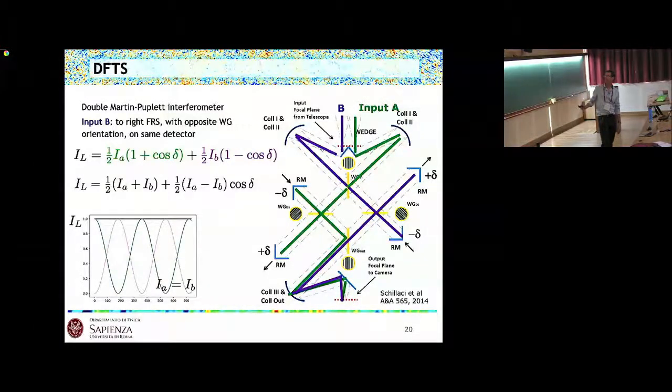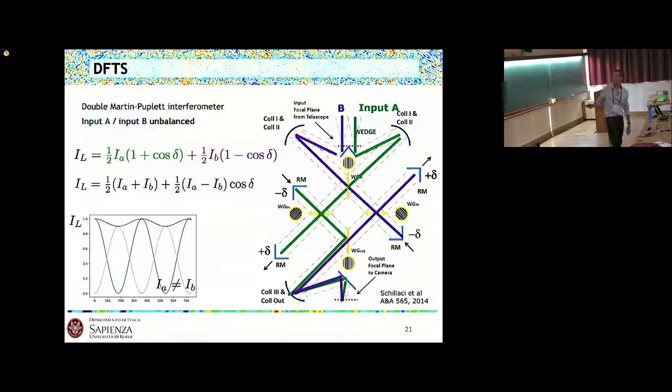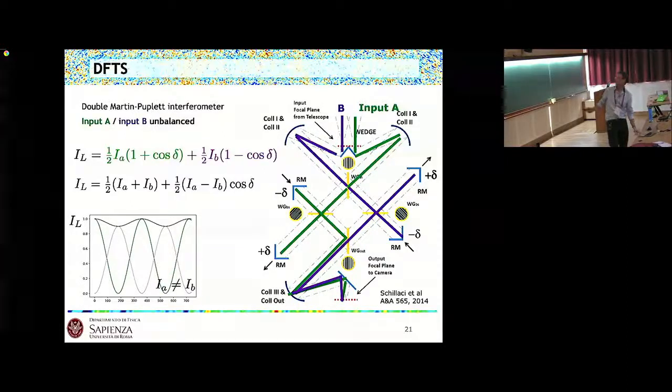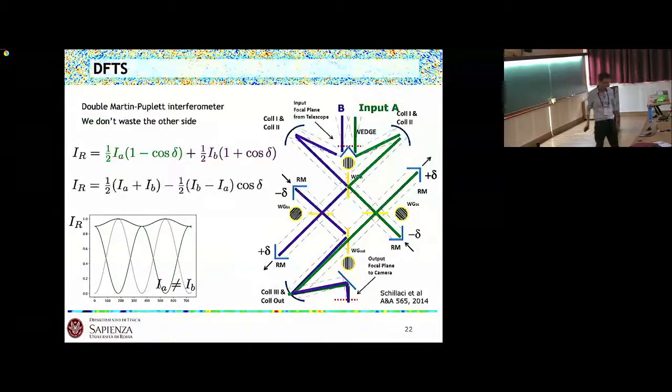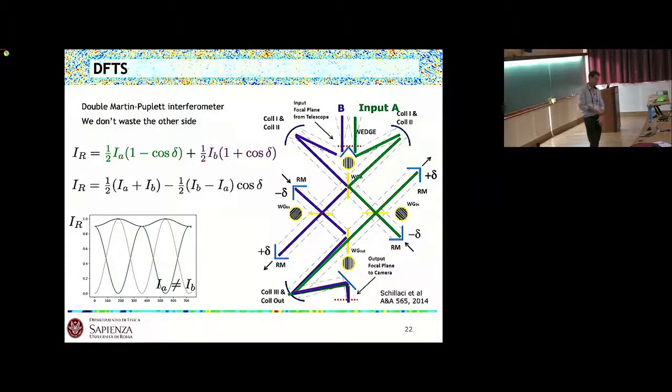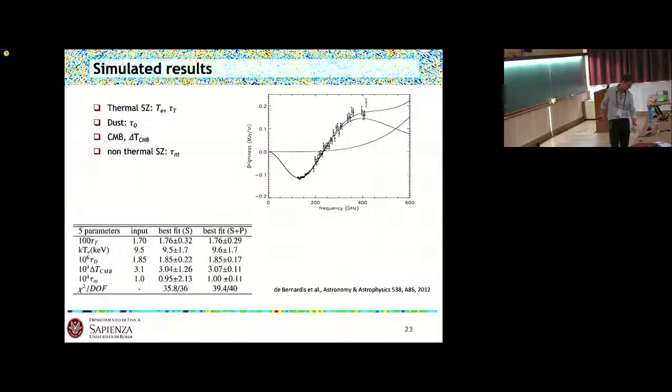If we rearrange those equations, the signal on this detector is going to be a common mode plus the difference of the signal from the two parts modulated by the FTS. So we will have a spectrum of the difference. If the input is balanced then we won't see anything. If there is some unbalance then we will see a spectrum of the difference between the two parts. So this is a differential spectrometer and we can use the other side of the instrument to double the number of detectors, so to double the signal. This would be B - A while before we had A - B, so we have those two.